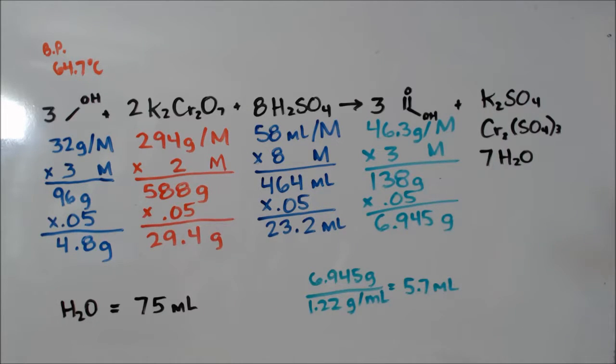So I need 4.8 grams of methanol, 29.4 grams of dichromate, 23.2 milliliters of sulfuric acid. Last time I didn't boil my sulfuric acid, it looked pink.